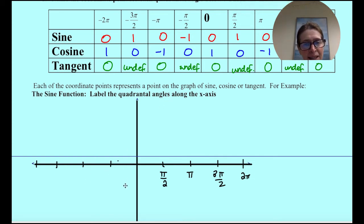And so on the opposite, on the negative side of the x-axis, we would have negative pi over 2, negative pi, negative 3 pi over 2, and negative 2 pi.